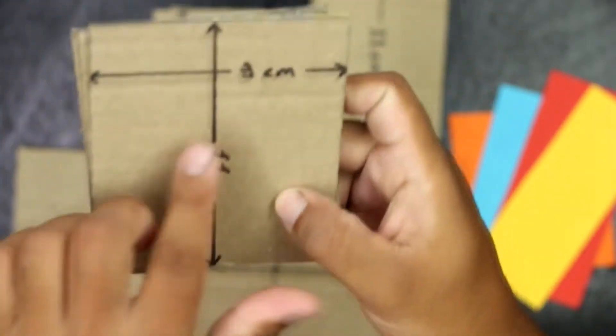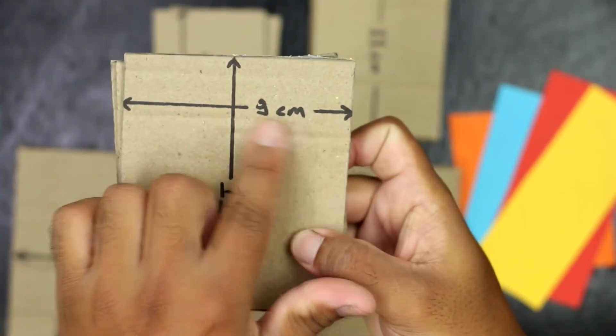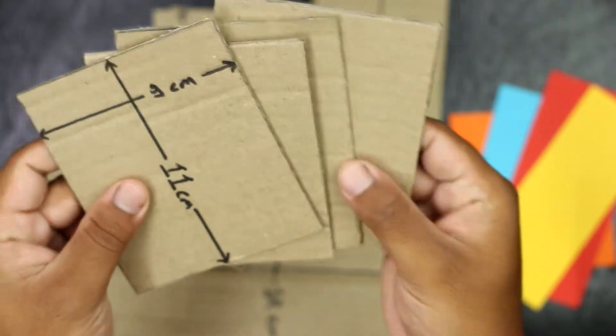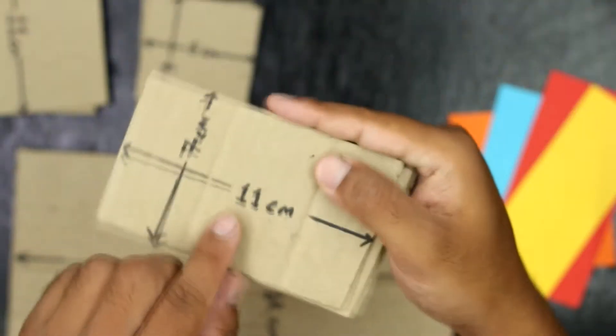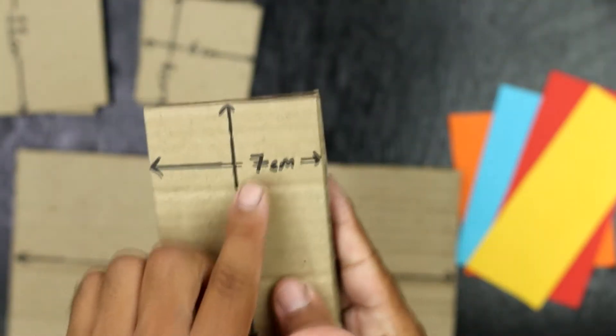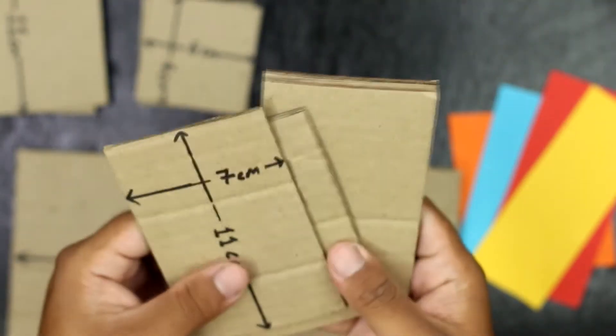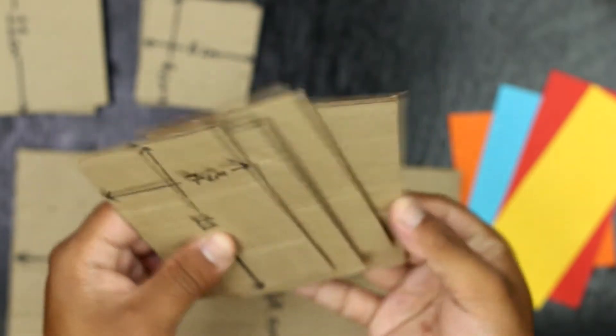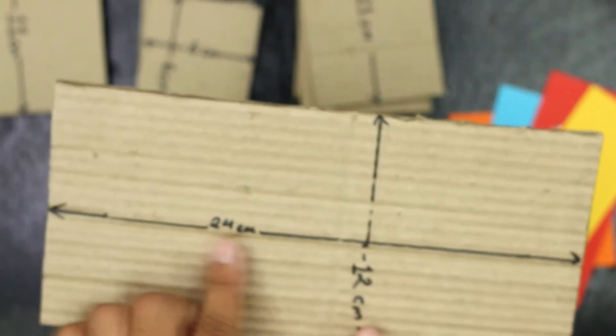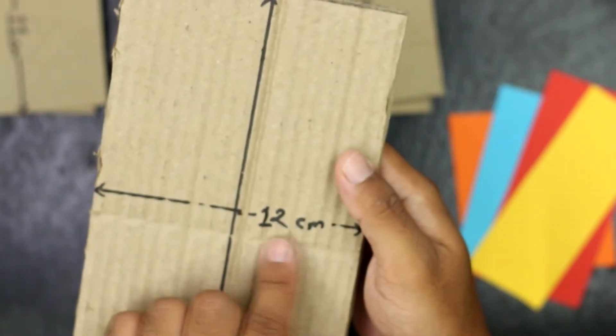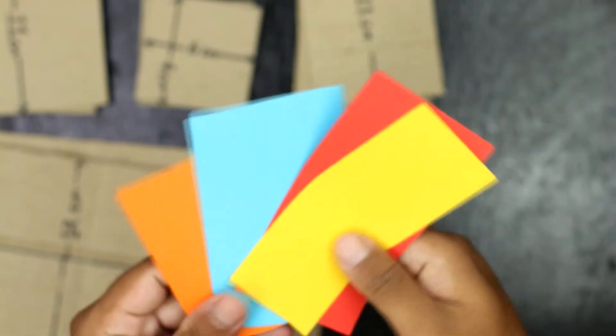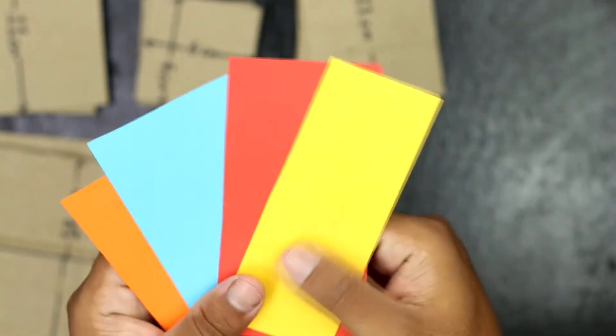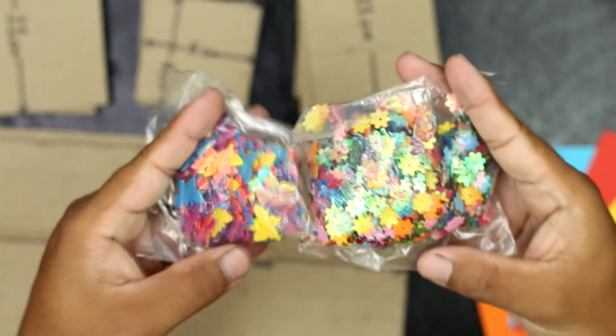Materials I have used in this DIY pencil holder are: side cardboard having length 11 cm and breadth 9 cm, middle cardboard having length 6 cm and breadth 6 cm, front cardboard having length 11 cm and breadth 7 cm, base cardboard having length 24 cm and breadth 12 cm, and different shapes.